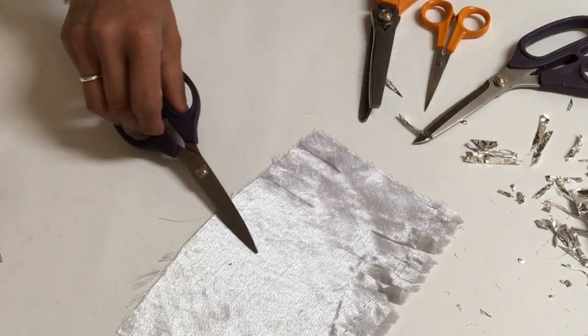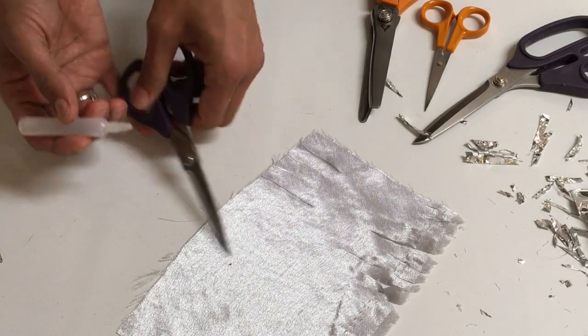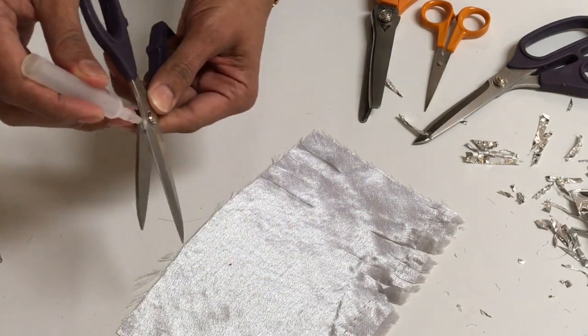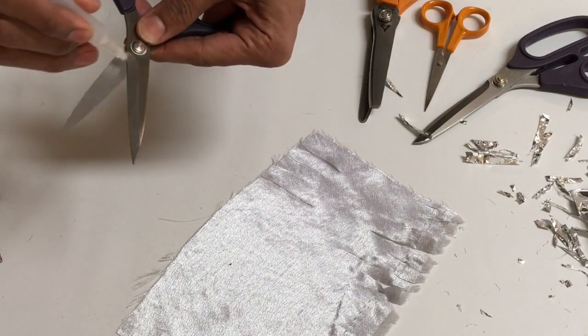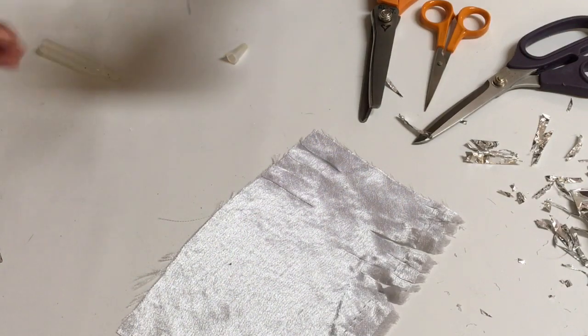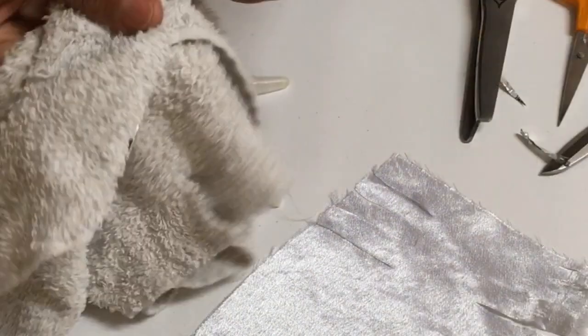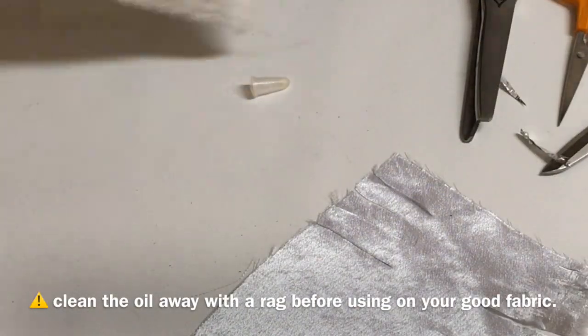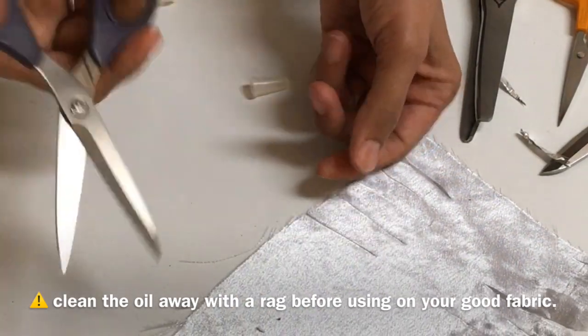Just grab yourself some sewing machine oil and pop it between the blades there, and just rub a little bit on the edge of the blade. And then that's ready to use. Perfect.